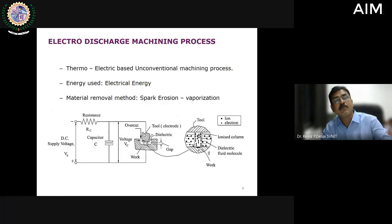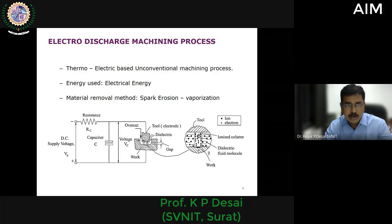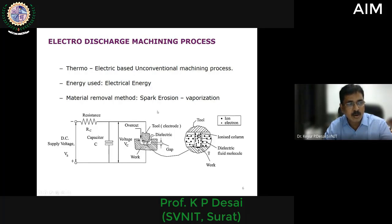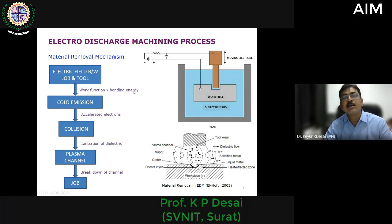As an introduction, the electro discharge machining process uses thermoelectric energy as input energy, so it is a thermoelectric-based machining process. The method of material removal is vaporization as a result of erosion caused by sparking. Regarding the mechanism of material removal, there is a workpiece and a tool. The tool is normally the cathode and the workpiece is the anode, connected in an electrical circuit. As a result of current flowing through the circuit, an electric field is generated between tool and workpiece when they are separated by a specific distance known as the spark gap.